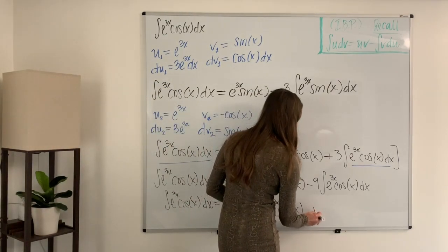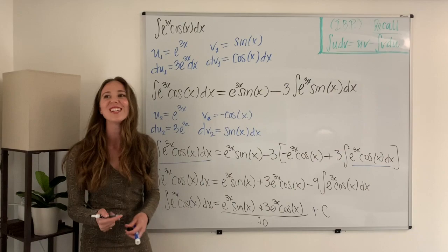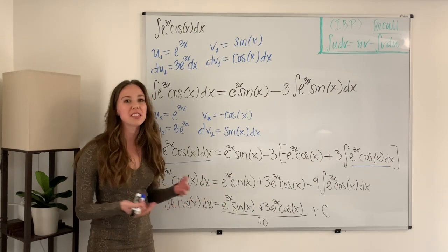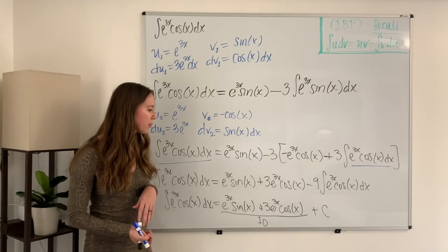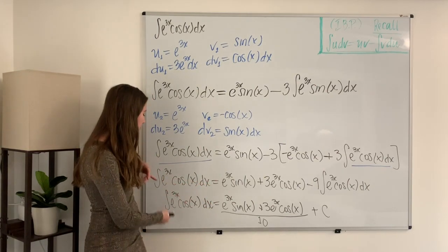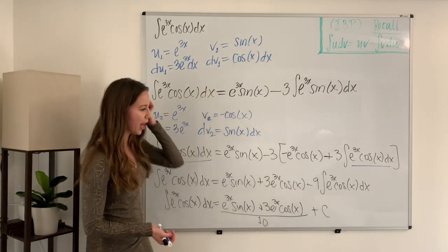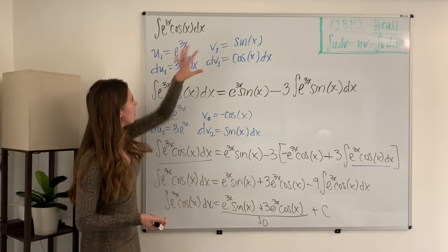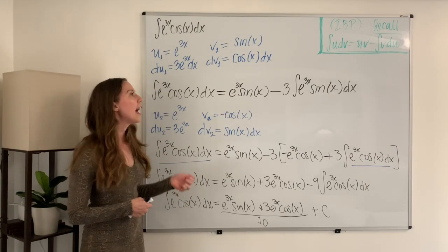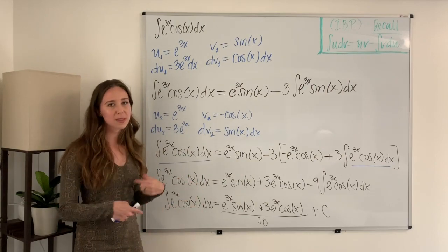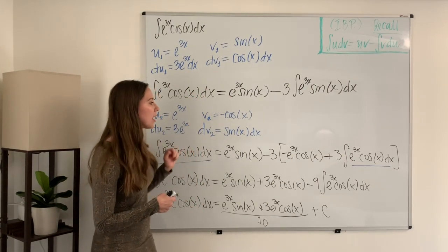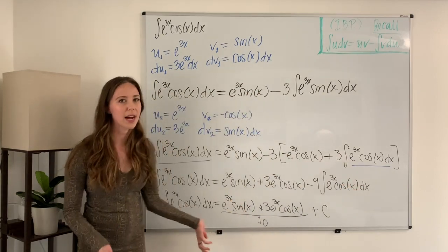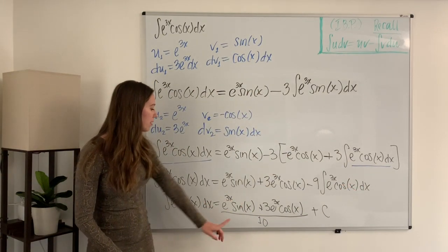And don't forget, since we did integration with an indefinite integral, we need plus C. It's something that's easy to forget when we get caught up in the process of doing a problem. So don't forget: if we're not working with bounds, it's an indefinite integral and we need the plus C at the end. The trick we used to solve this one was dependent on the fact that our functions have cyclic derivatives — meaning if we keep taking the derivative over and over, we get back to where we started. We used algebra to combine like terms and then easily find the answer.